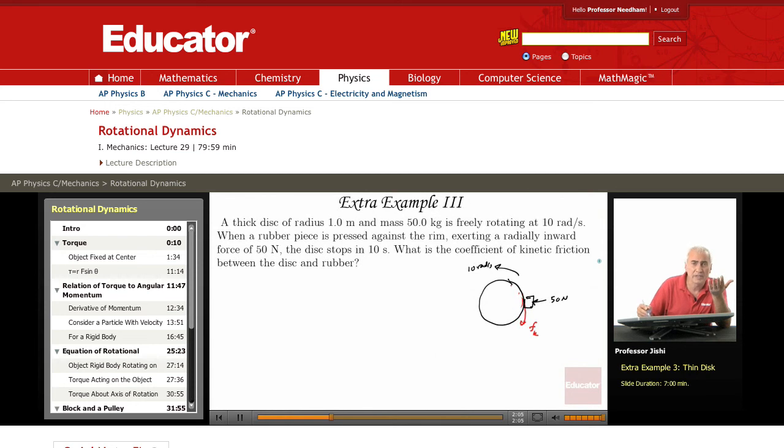Now, I want the coefficient of kinetic friction. The force of friction, of course, is Fk equals mu times the normal force, Fn. The normal force, since I'm putting 50 newtons pushing inward, so what's the normal force? 50 newtons up. So the normal force is 50 newtons. And mu is my unknown.